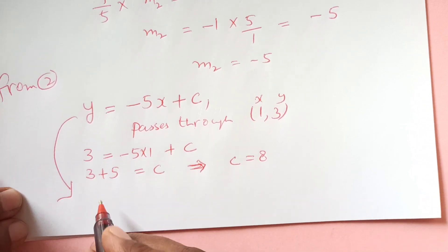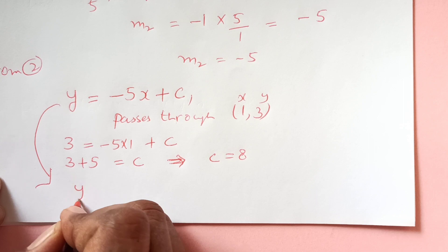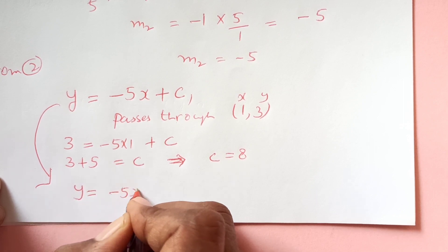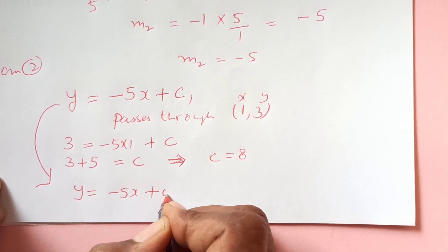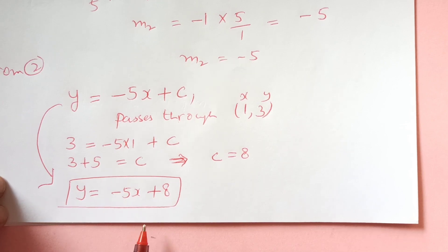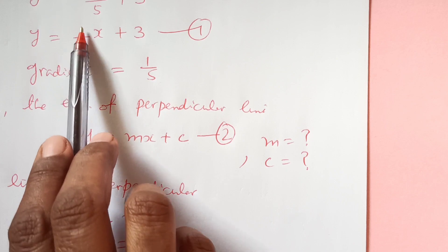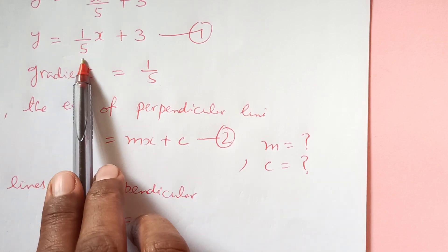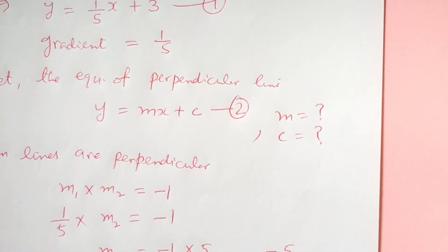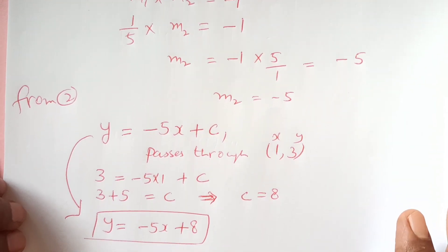Substituting this value, the equation of the perpendicular line is y = -5x + 8. You can verify: the slope here is -5 and the slope of the given line was 1/5, so their product is -1. I hope you understood that.